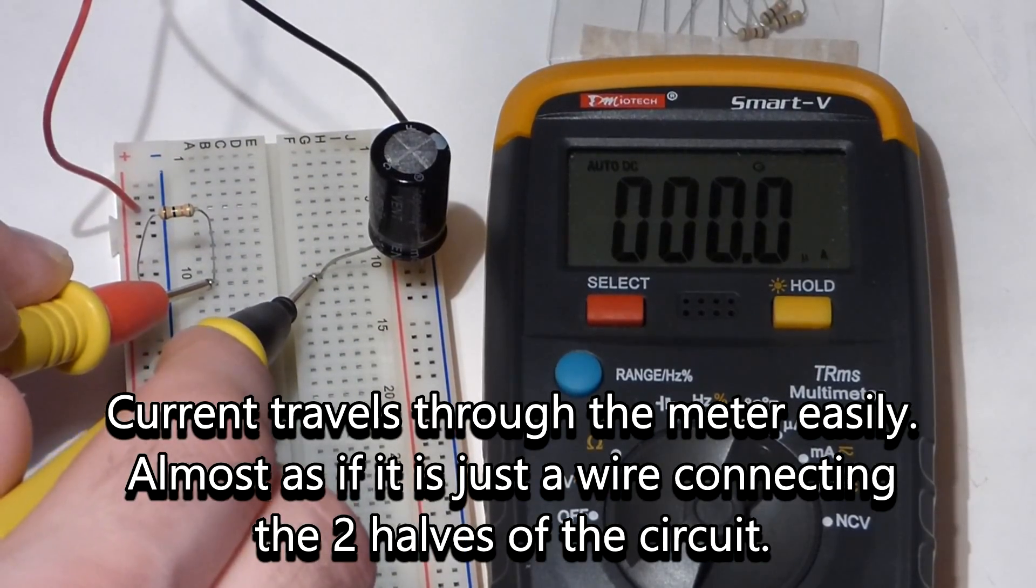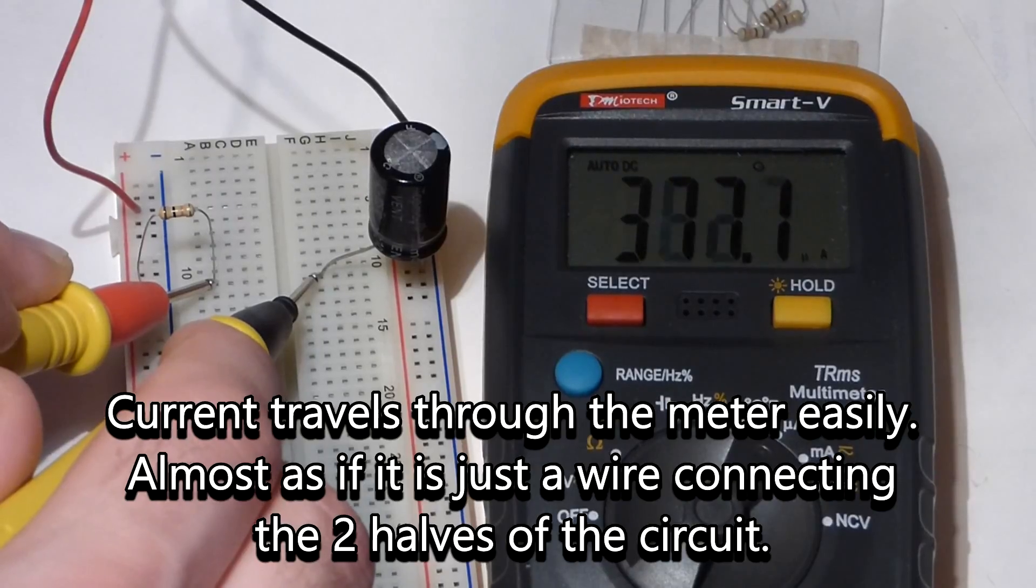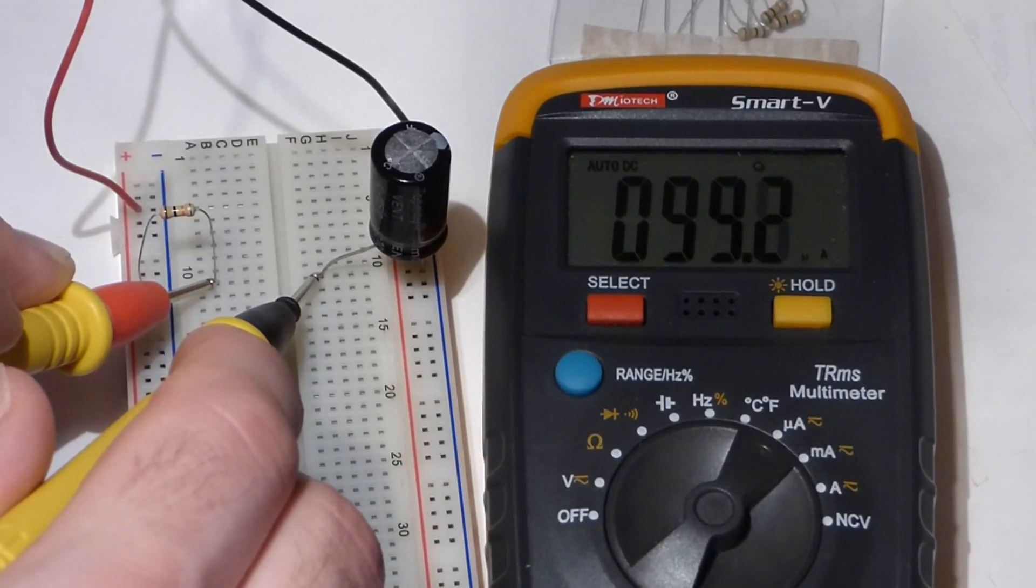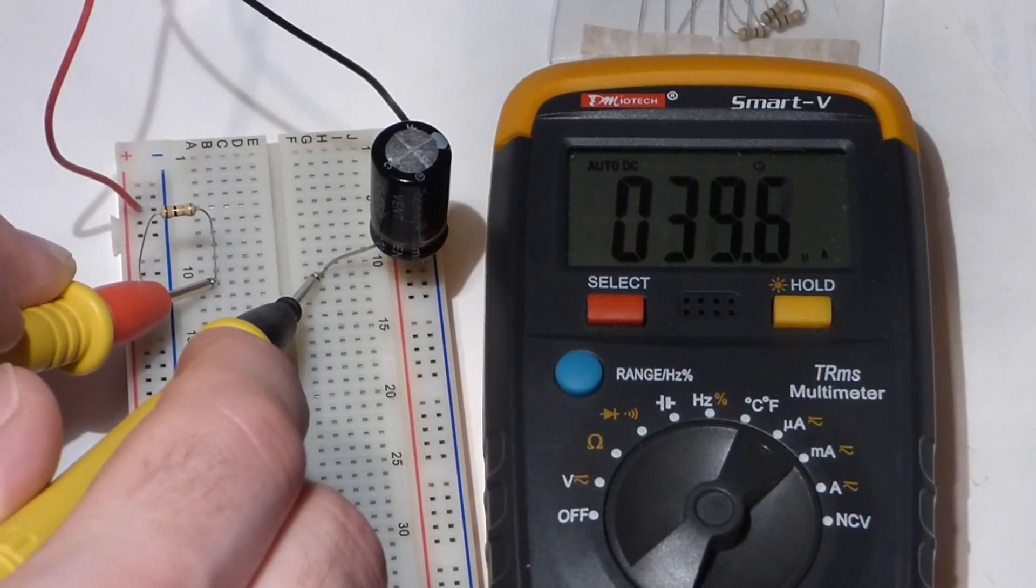Now you'll see we started at almost 800 microamps. And about, close to every second, it started going down 100. At first it went down faster. And now you can see it's going down by tens.